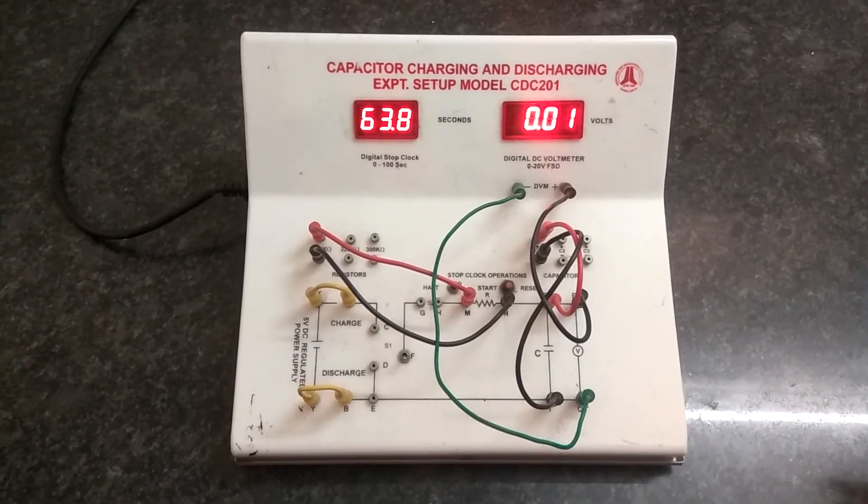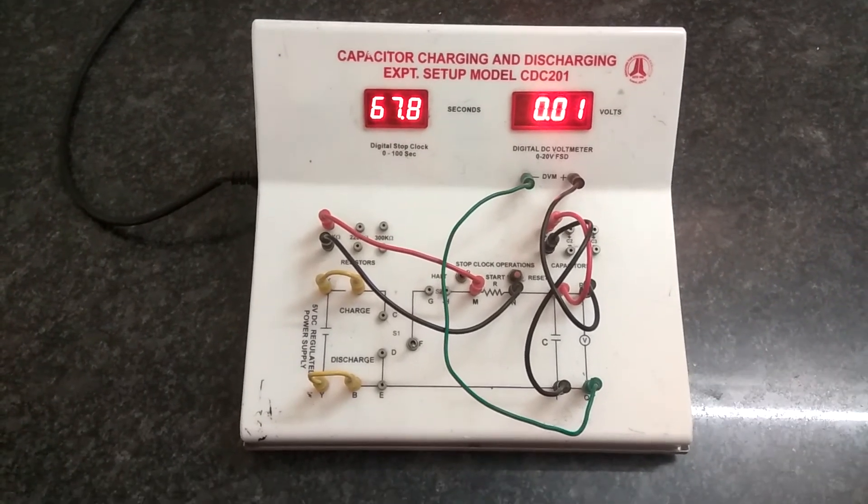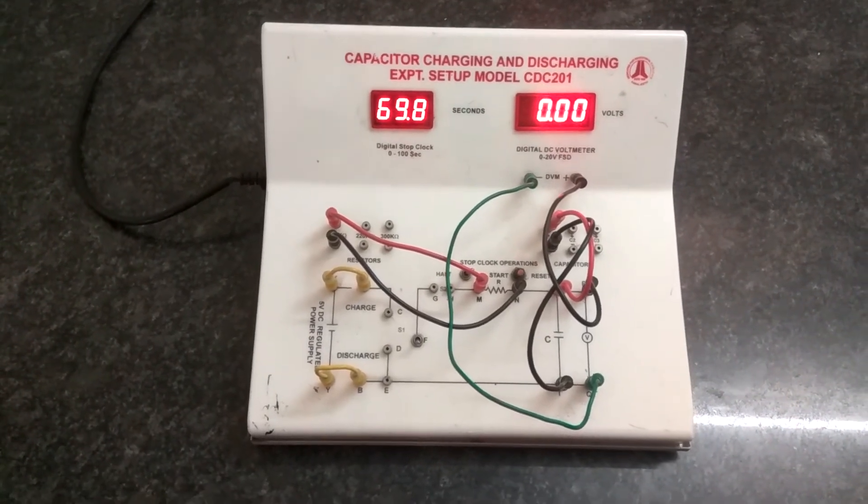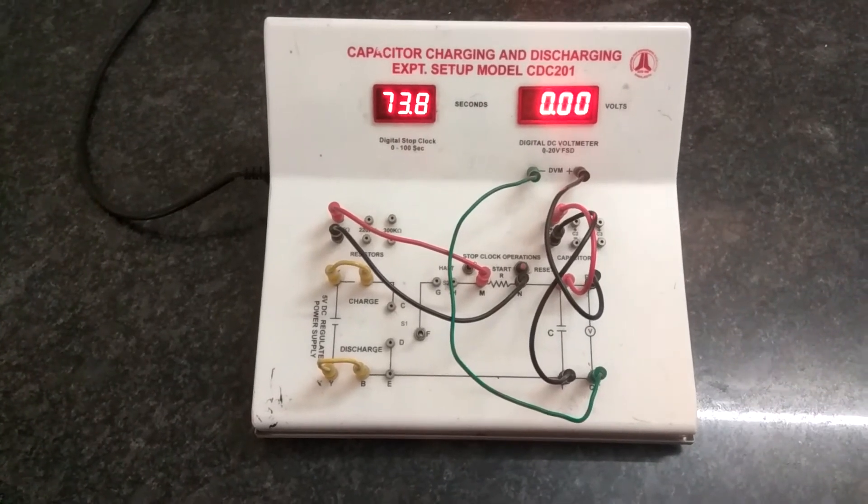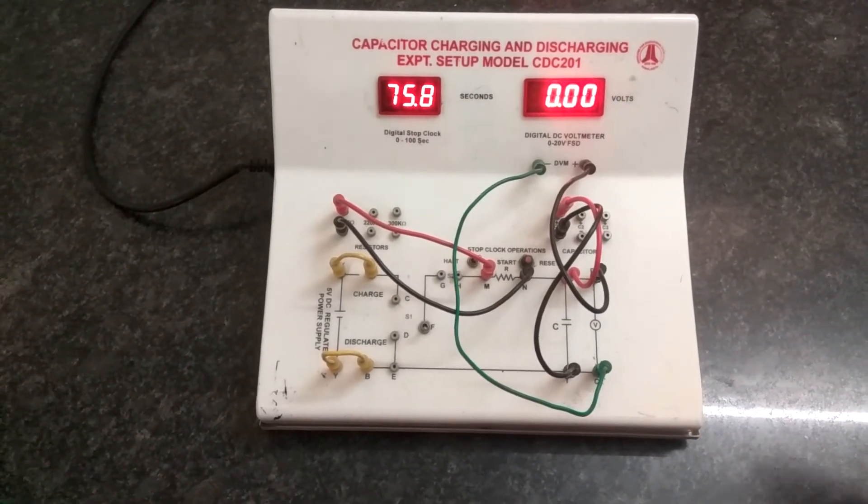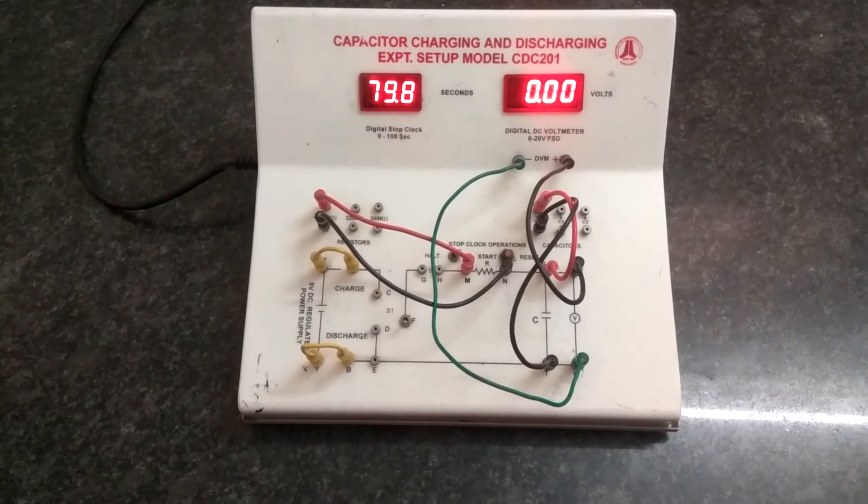For the different capacitors, the charging and discharging voltage may go into vary. As for the capacitor C1 is concerned, the capacitor C1 has decreased to 0 for the 75th second only. But it may vary for the C2 and C3 accordingly.